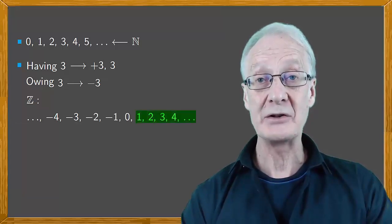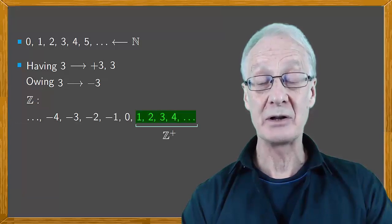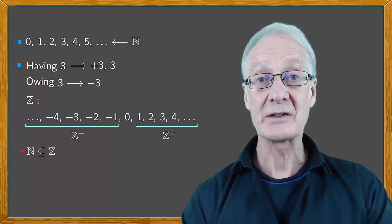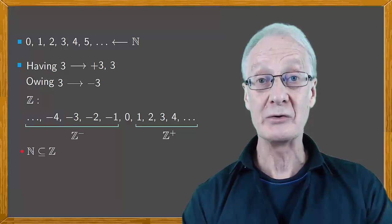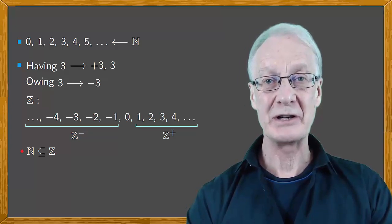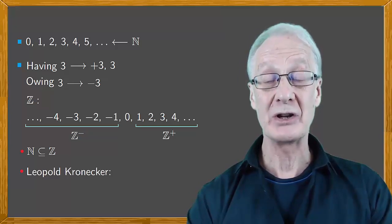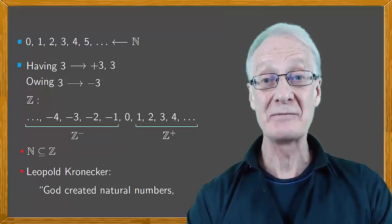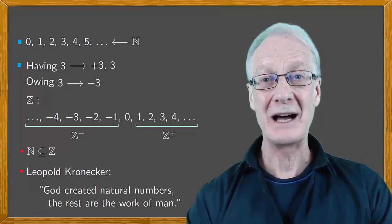The positive integers are denoted by Z plus, and the negative integers by Z minus. The set of integers, of course, includes the natural numbers. When negative numbers were first introduced, they were very controversial. In fact, the German mathematician Leopold Kronecker said this: God created natural numbers, the rest are the work of man.